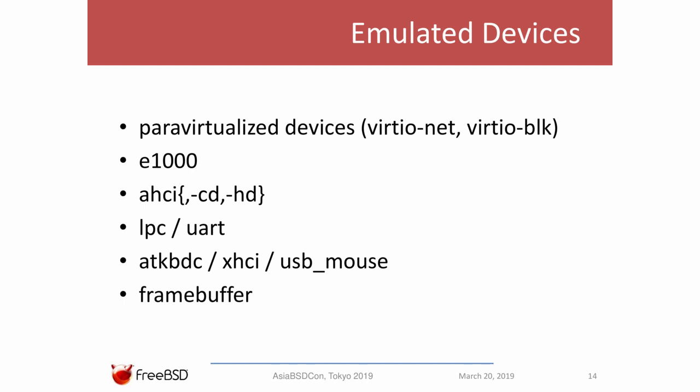The emulated devices include any devices that are either para-virtualized, like virtual network or block devices, the E1000 device, AHCI with its alternative names — AHCI, AHCI-HD, and AHCI-HDD — the console, LPC and UART, and any input devices such as ATK, BDC, XHCI, and the USB mouse.